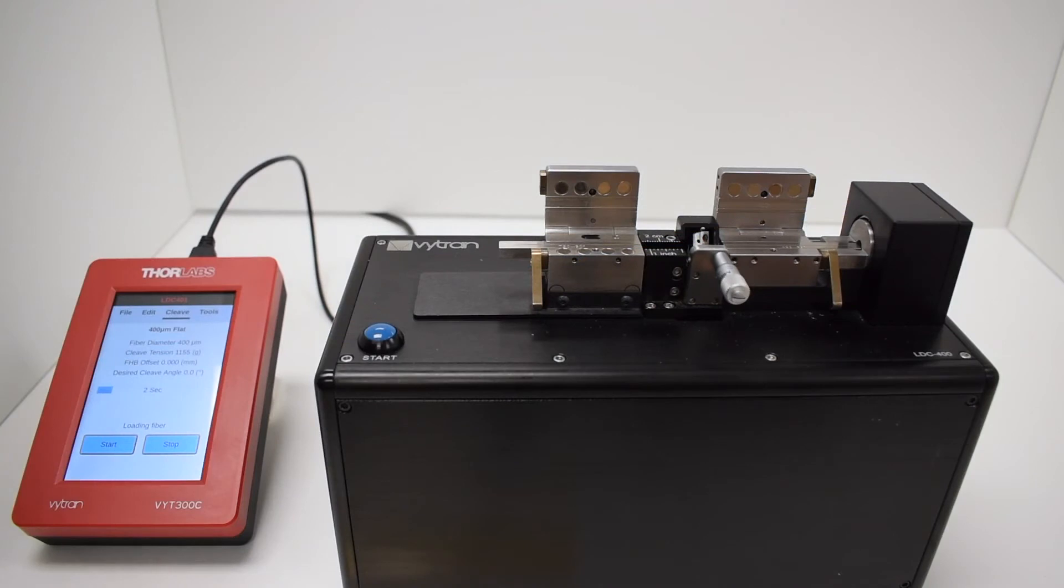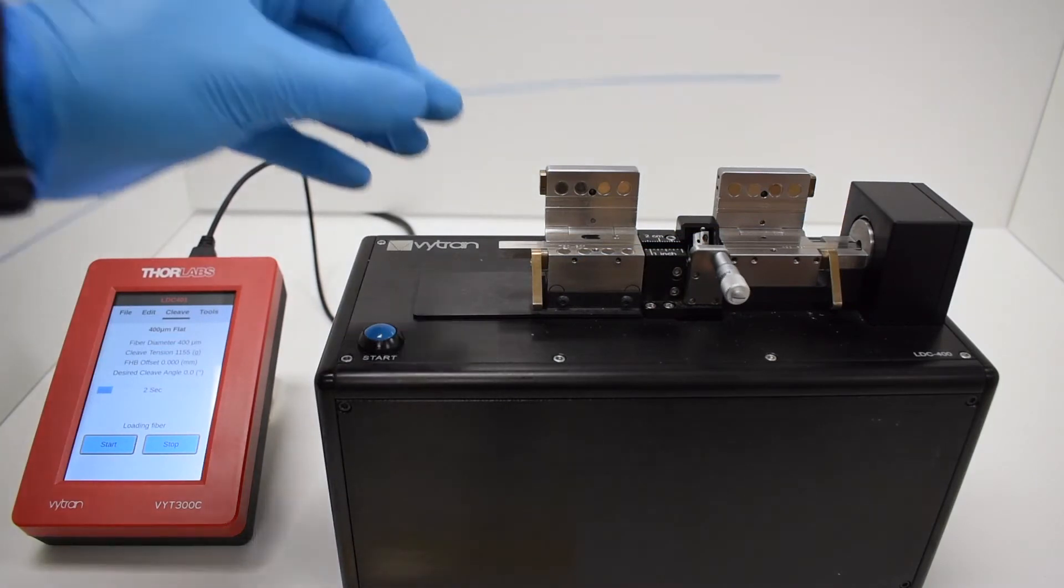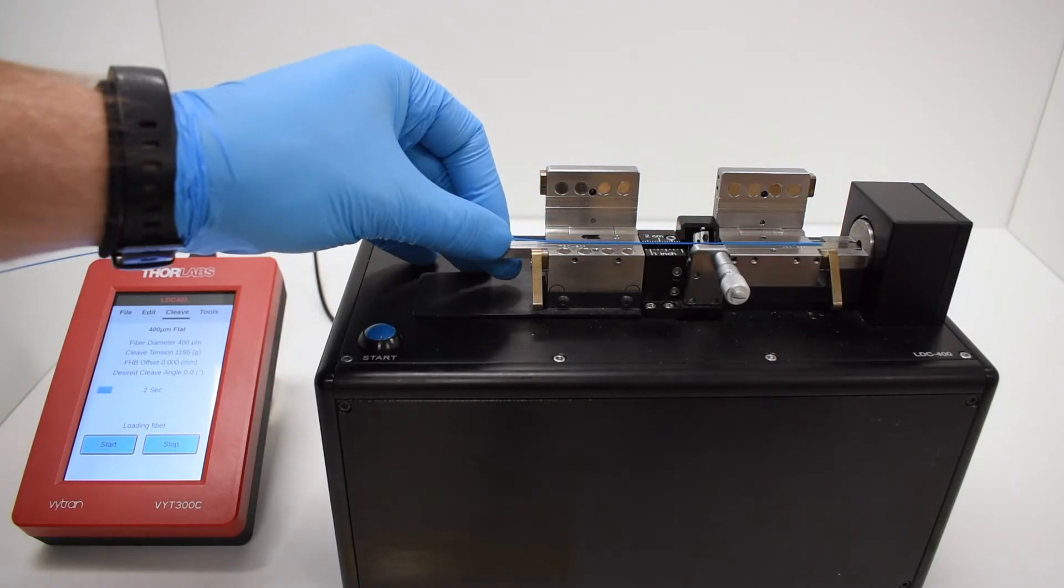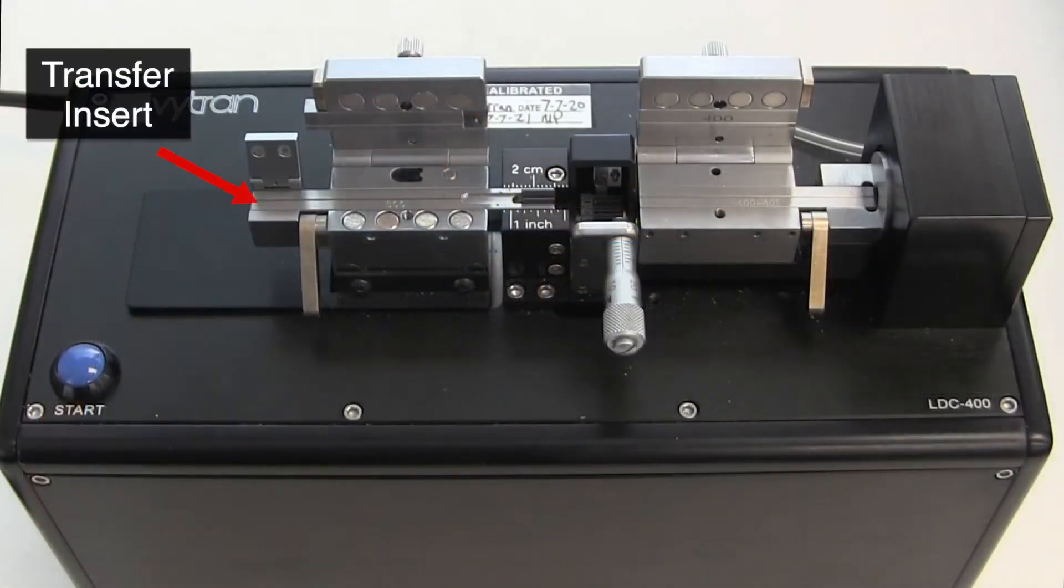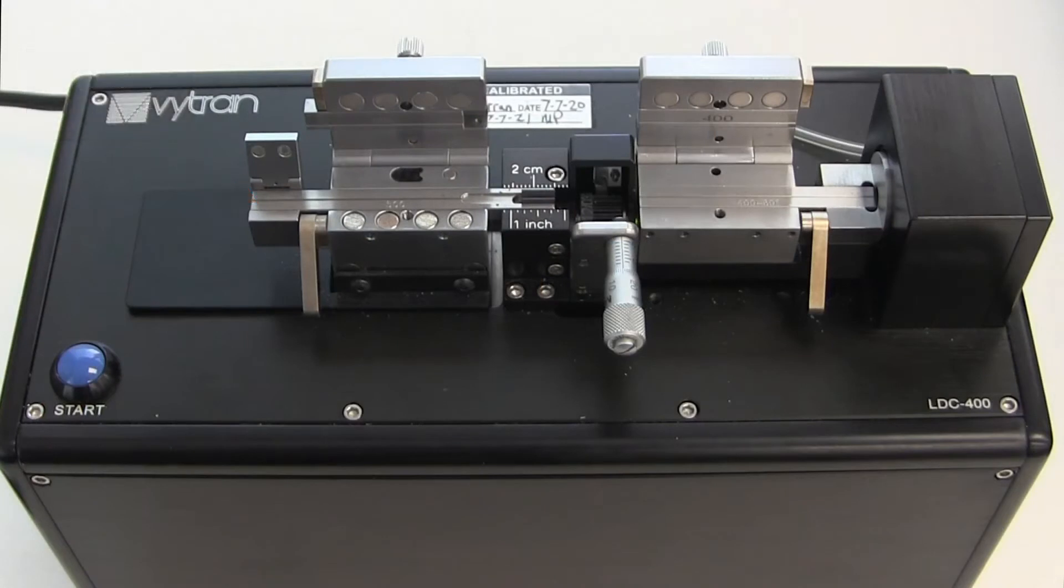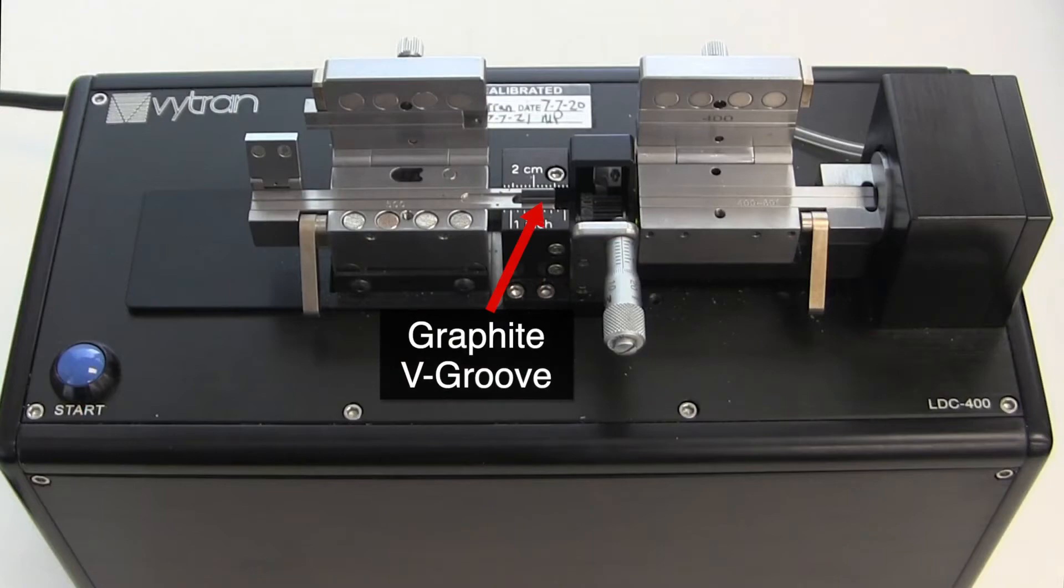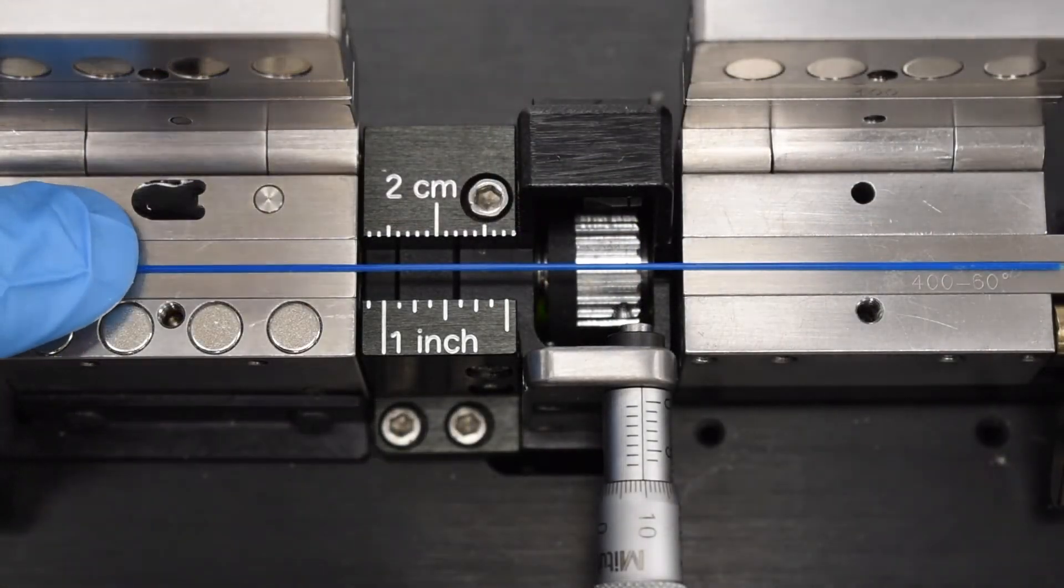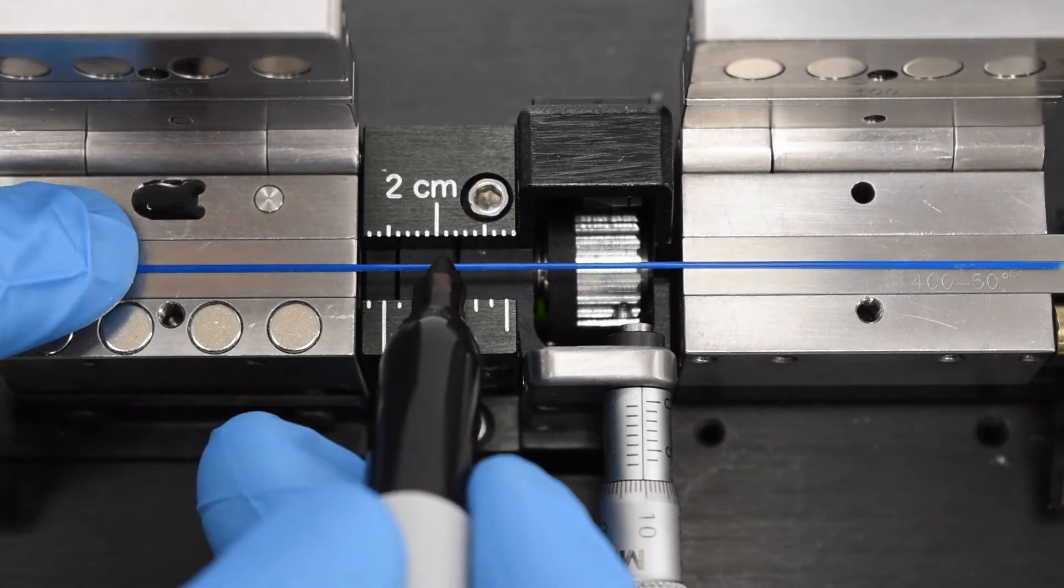If you haven't measured the strip length, you can lay a length of clean fiber in the cleaver, with the end extending to the far side of the right fiber holding block lid. If you are using a transfer insert, be mindful whether you want the coating or glass cladding in the graphite V-groove. Then, using a felt-tipped marker, mark where you want the strip shoulder to be.